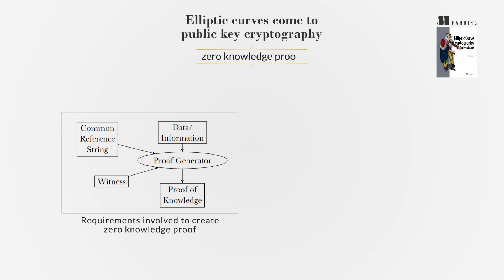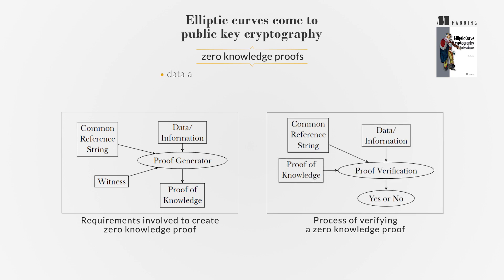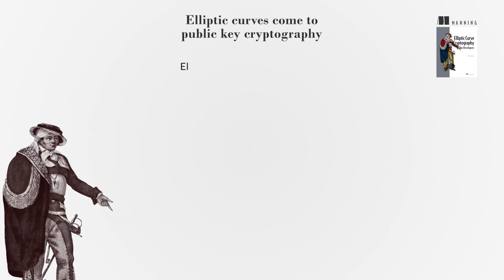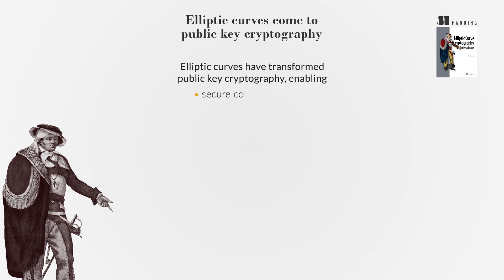Zero-knowledge proofs emerged, enabling data authentication without data exposure, particularly crucial in blockchain transactions for anonymity and confidentiality. These proofs evolved from interactive to non-interactive. In summary, elliptic curves have transformed public-key cryptography, enabling secure communication, digital signatures, and zero-knowledge proofs.